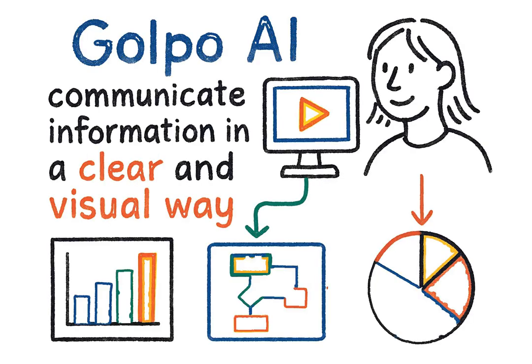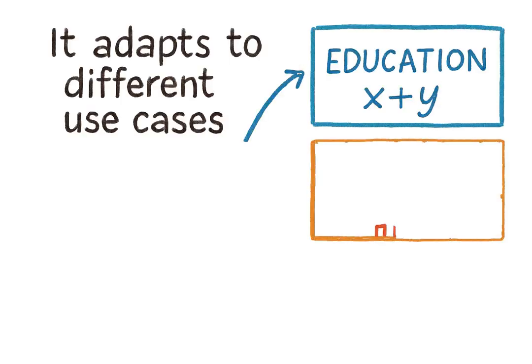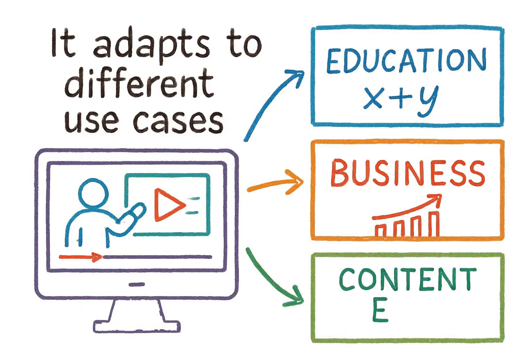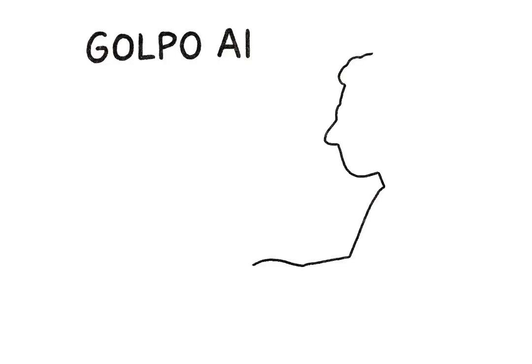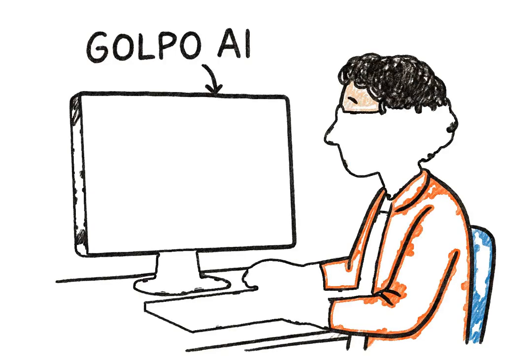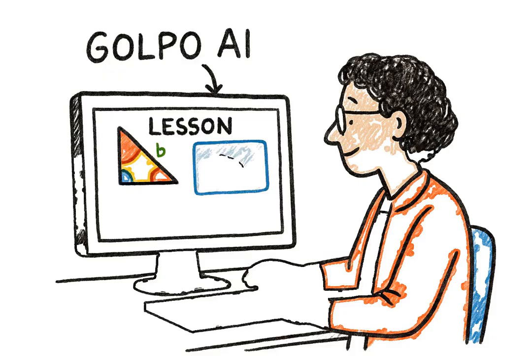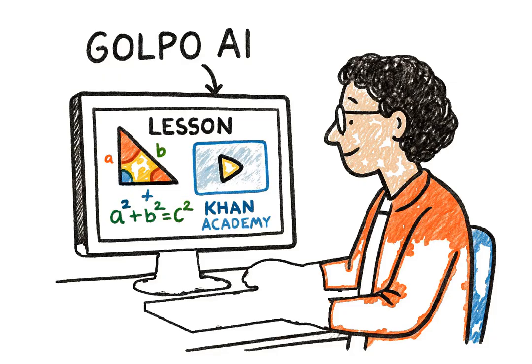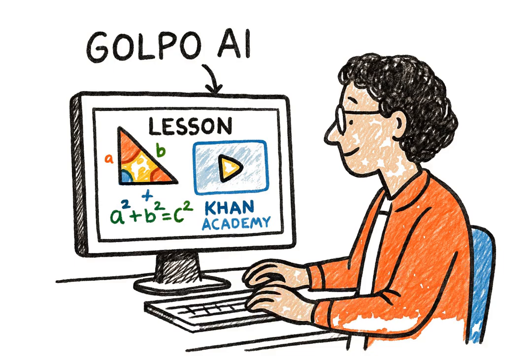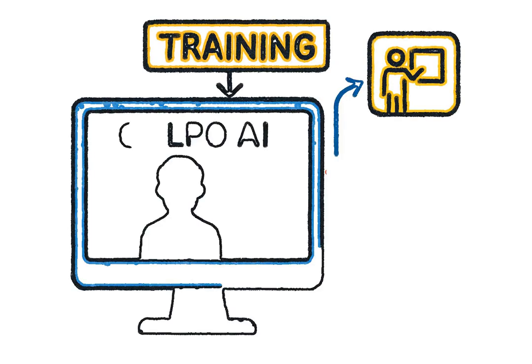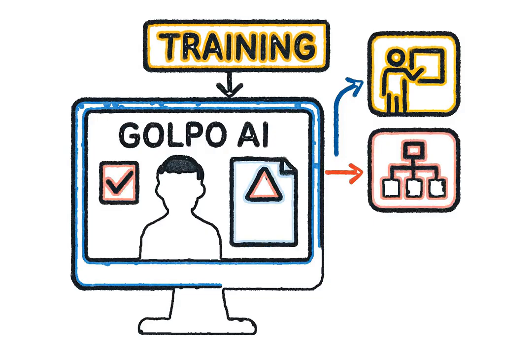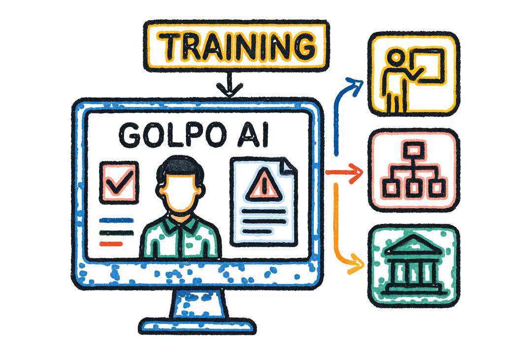Golpo AI serves anyone who wants to communicate information in a clear and visual way. It adapts to different use cases across education, business, and content creation. Teachers and instructors use Golpo AI to turn lessons, notes, and slides into Khan Academy-style explainer videos that make learning engaging and effective. Companies use Golpo AI to create onboarding, compliance, and internal training videos that save time and improve consistency across their organization.